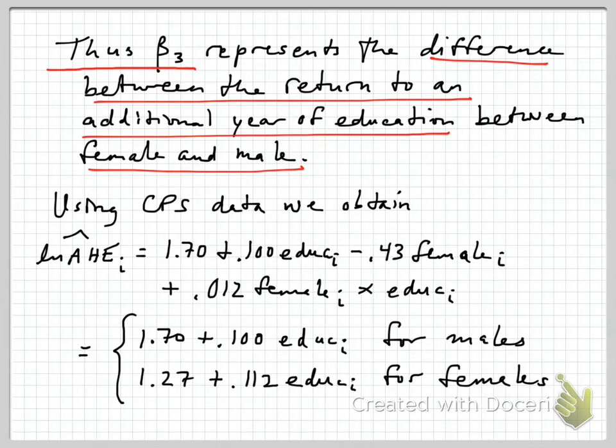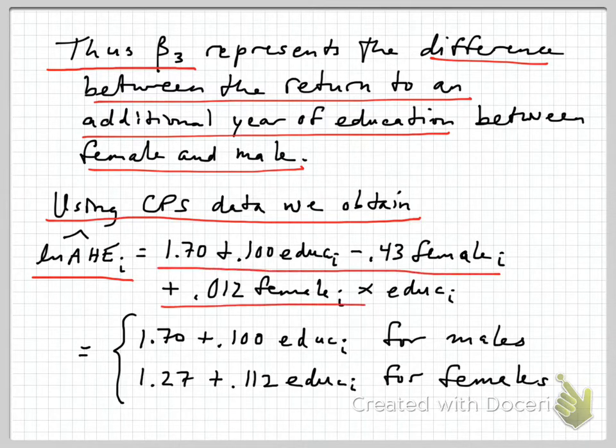When we use some of the CPS data that we've used in class, the current population survey, we find that when we estimate this on our sample, we get that the predicted value of log average hourly earnings has this expression. In particular, you can see that the value of beta 3, which is the coefficient on the interaction term, turns out to be 0.012.